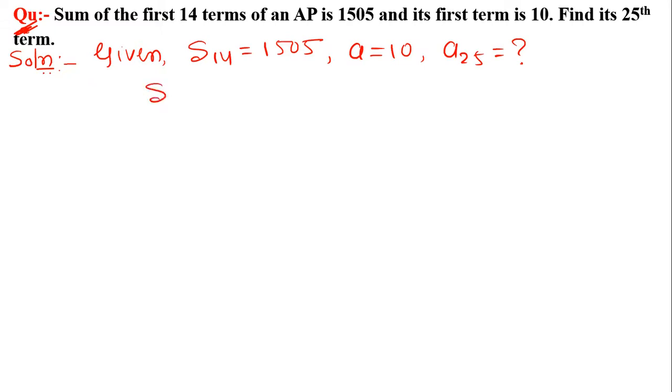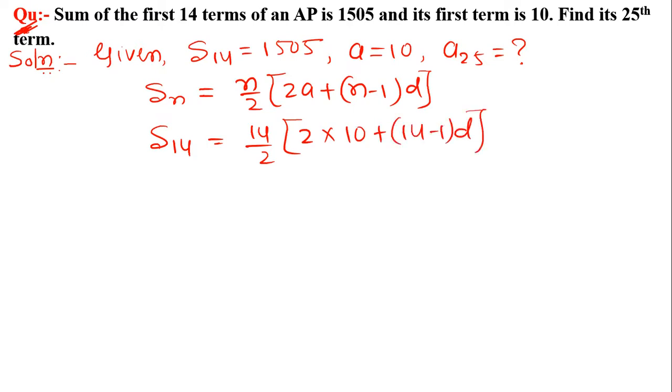We know that the formula for sum of first n terms of an AP is Sn equals n upon 2 into 2a plus n minus 1 times d. Now we put the value of n equals 14, so 14 upon 2 into 2 into 10 plus 14 minus 1 times d, and the value of S14 is 1505.